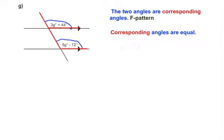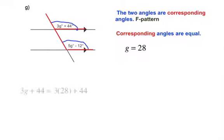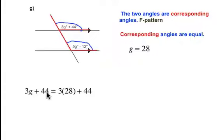Now what we're going to do is take our g equals 28 and we're going to sub in to our equation. So 3g plus 44 is equal to, when we sub in for g equals 28, 3 times 28 is 84. And 84 plus 44 is 128. So we can put this into our diagram. 3g degrees plus 44 degrees is 128 degrees.